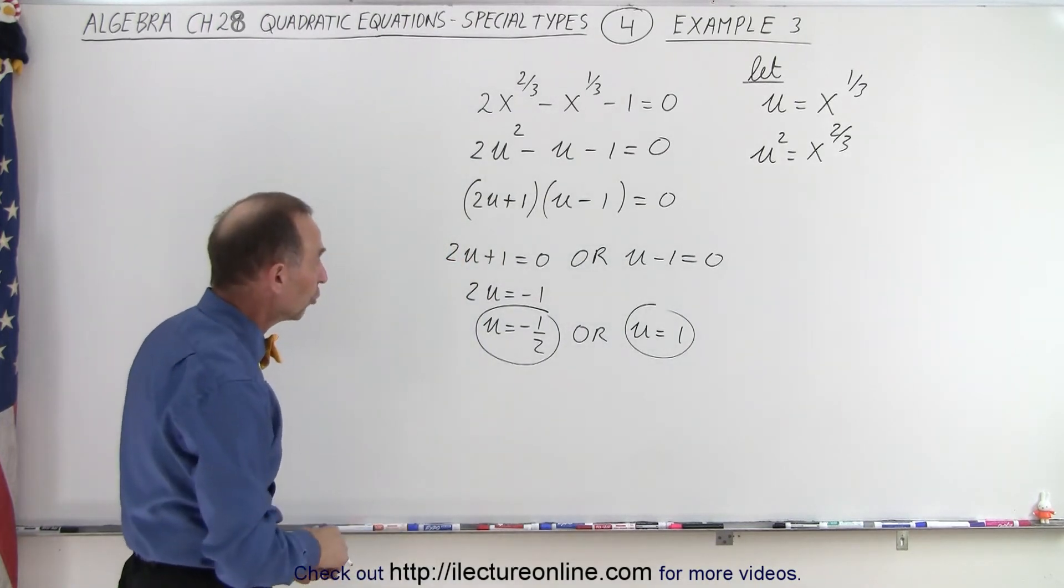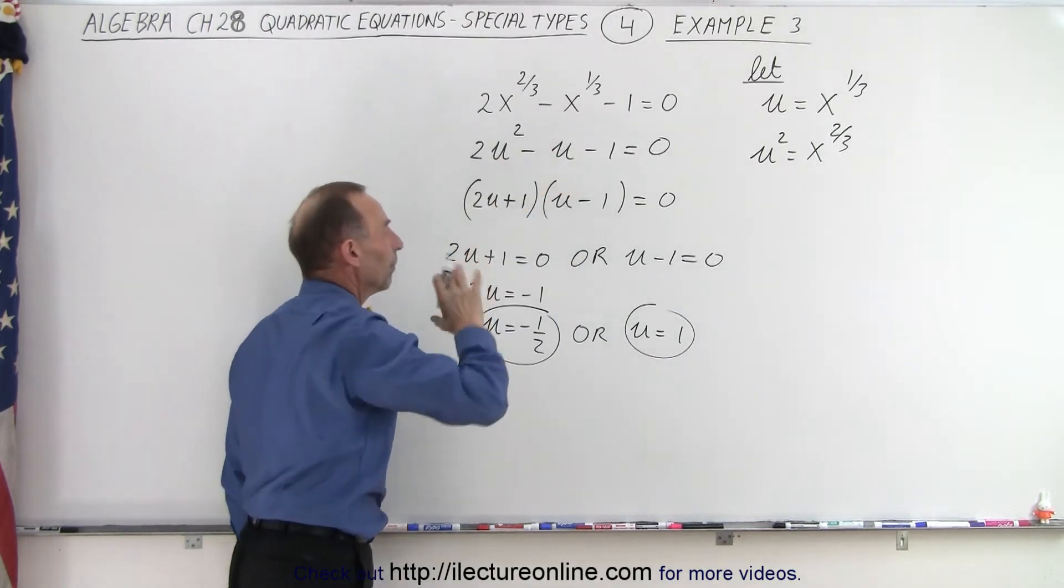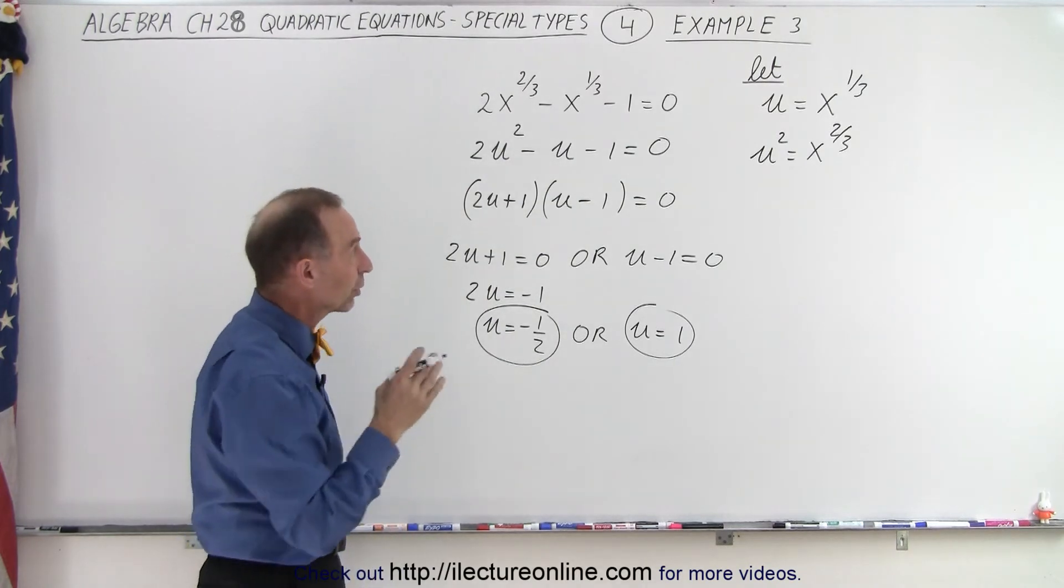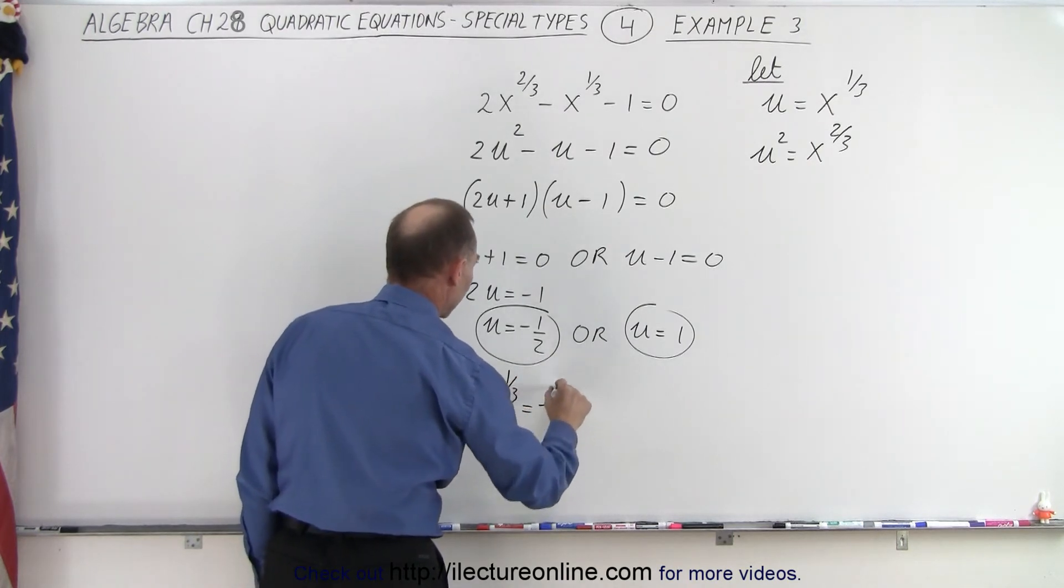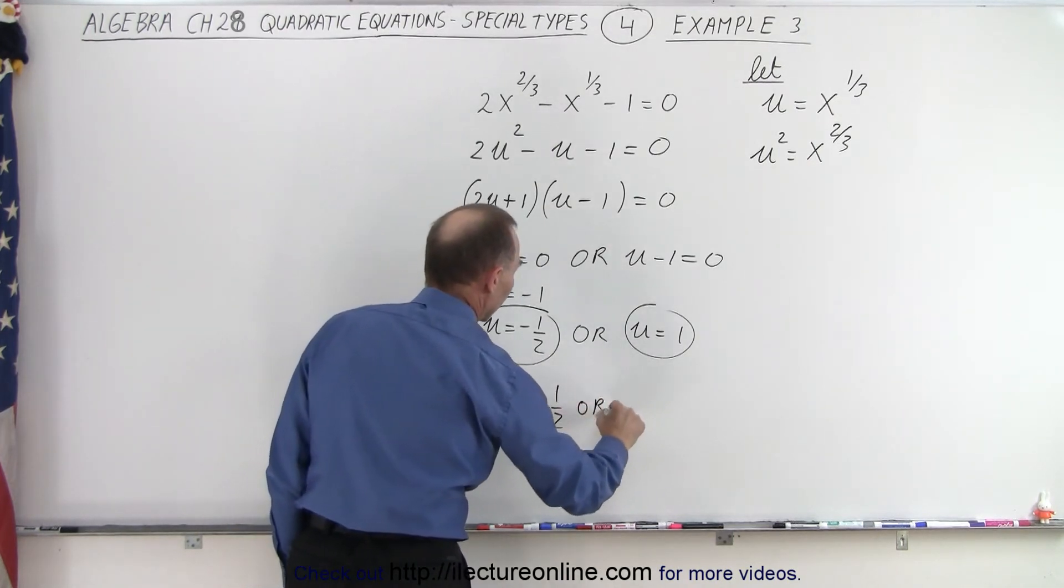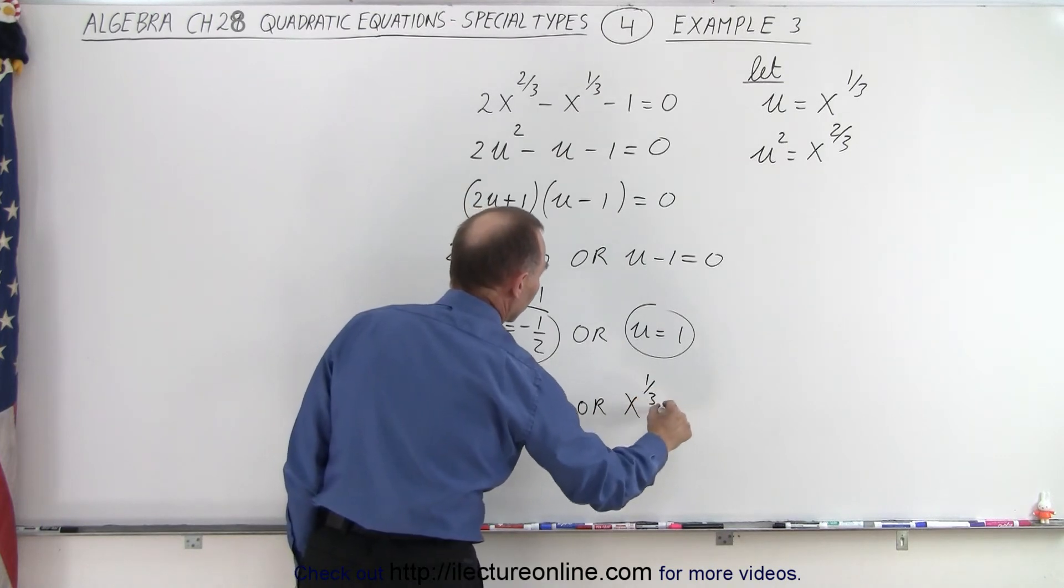They're both valid solutions to this quadratic equation, but we weren't looking for u, we're looking for x. So now we need to make the substitution back. We can say that x to the one-third is equal to minus 1 half, or x to the one-third is equal to 1.